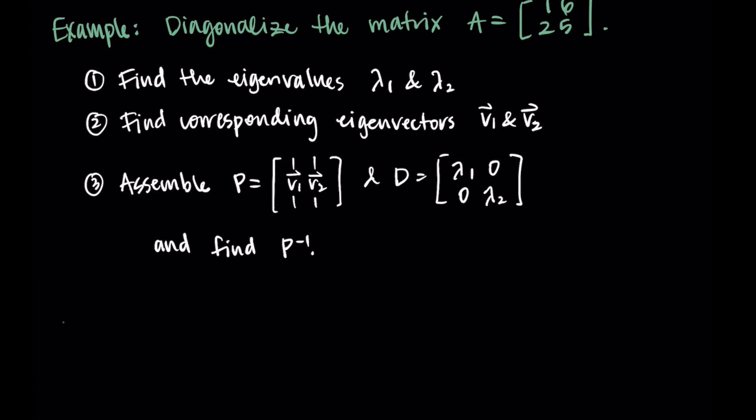So let's go ahead and find the eigenvalues. Our process here is to find A minus lambda I and then take the determinant of that matrix. That determinant will result in the characteristic polynomial, which we set equal to zero. So A minus lambda I is just A with minus lambdas on the diagonal: we have 1 minus lambda and 6 in the first row, and then 2, 5 minus lambda in the second row.